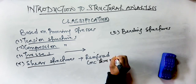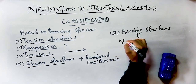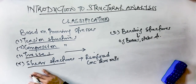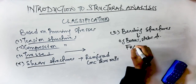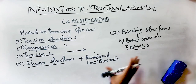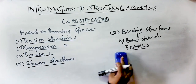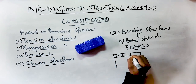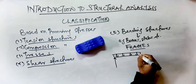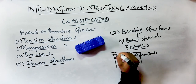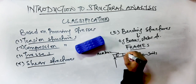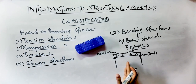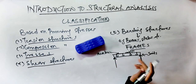Bending structures mainly develop bending stresses under the action of external loads. Examples are beams, slabs, rigid frames, and so on. Frames are composed of structural members connected together by either rigid or hinged connections to form a stable configuration. They are commonly used in multi-story buildings, bridges, and industrial plants. For frames, external loads are applied on both members and joints, whereas for trusses, external loads are applied on joints only.